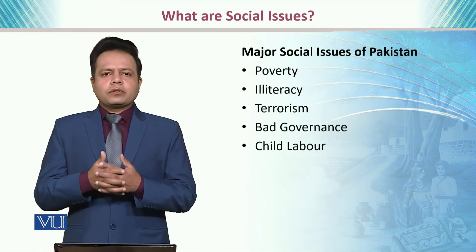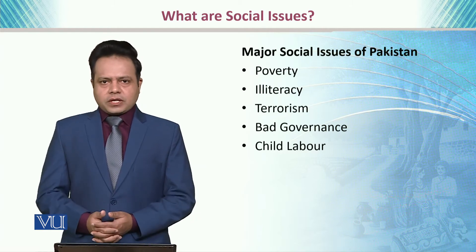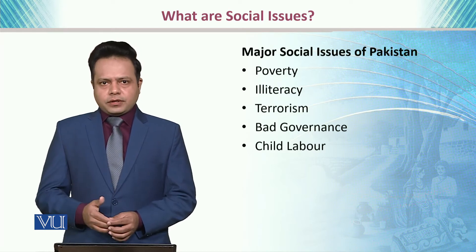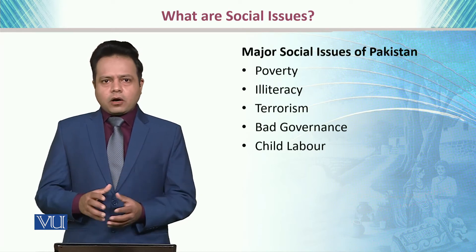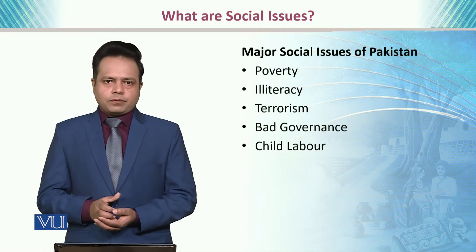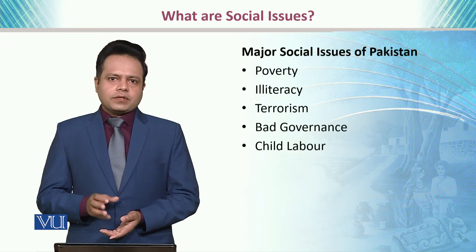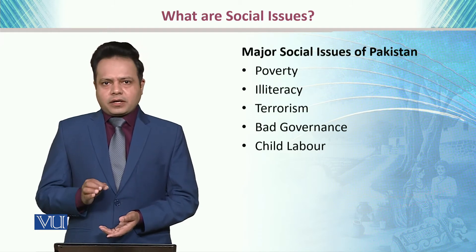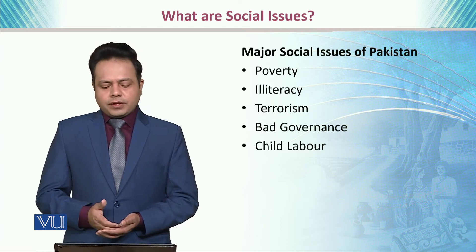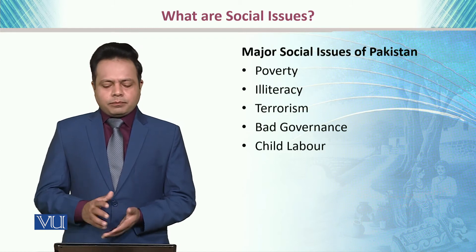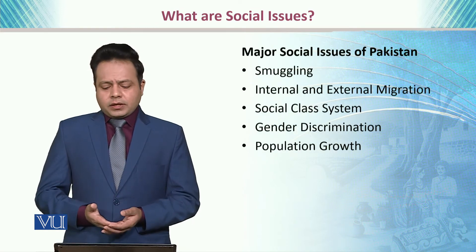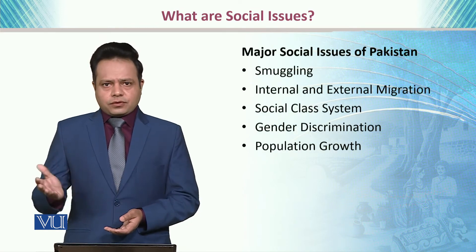If we talk about the major social issues of Pakistani society, there are a few mentioned here, but this is not an all-inclusive list. We will be talking about these particular aspects because they are significantly affecting the lives of Pakistani people. Among them are poverty, illiteracy, terrorism, bad governance, child labor, smuggling, and internal and external migration.